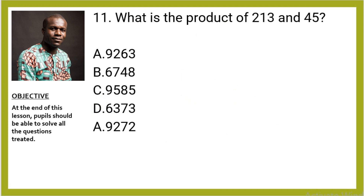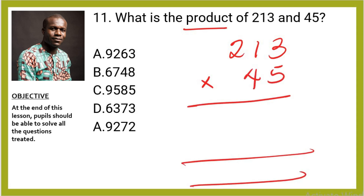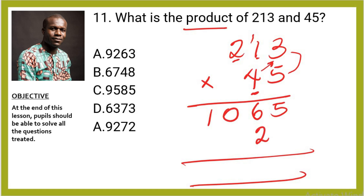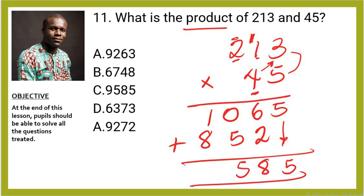Question 11: What is the product of 213 and 45? Product means multiplication. 5×3=15, write 5 carry 1; 5×1=5+1=6; 5×2=10. Then 4×3=12, write 2 carry 1; 4×1=4+1=5; 4×2=8. Adding the partial products: 1,065 + 8,520 = 9,585. The right answer is 9,585.